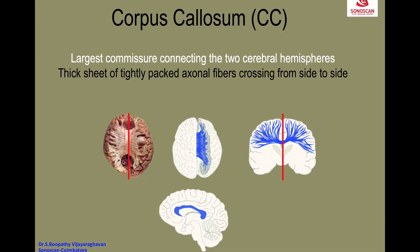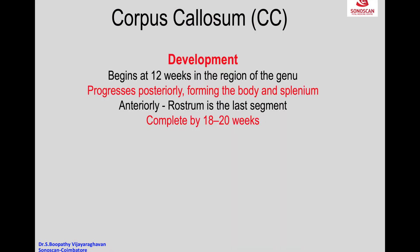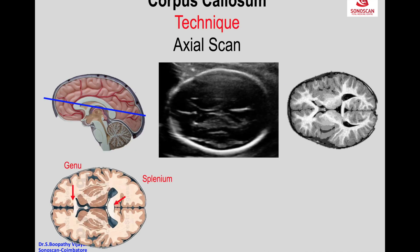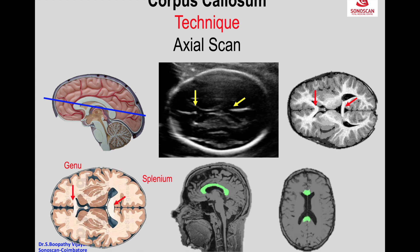Midsagittal section — when you cut like this, you will get a midsagittal section. It is complete only by 18 to 20 weeks, so before that, interpretation of an anomaly becomes difficult. The cingulate sulcus also develops along with the corpus callosum. The development of cingulate sulcus occurs along with the transthalamic section of the axial scan, and the MRI image shows the genu and the splenium of the corpus callosum.